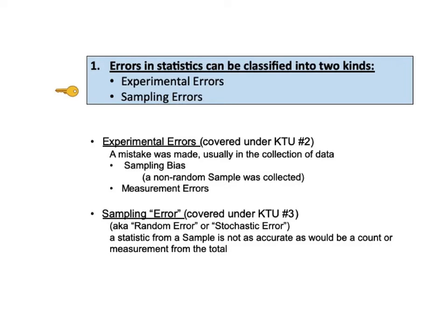The second kind of error in statistics is called sampling error, also known as random error or stochastic error. These are not really errors — no one did anything wrong. It's just that if, for example, we calculate the mean of a sample, it's not as accurate a picture of the entire population or process as calculating the mean of the entire population or process.